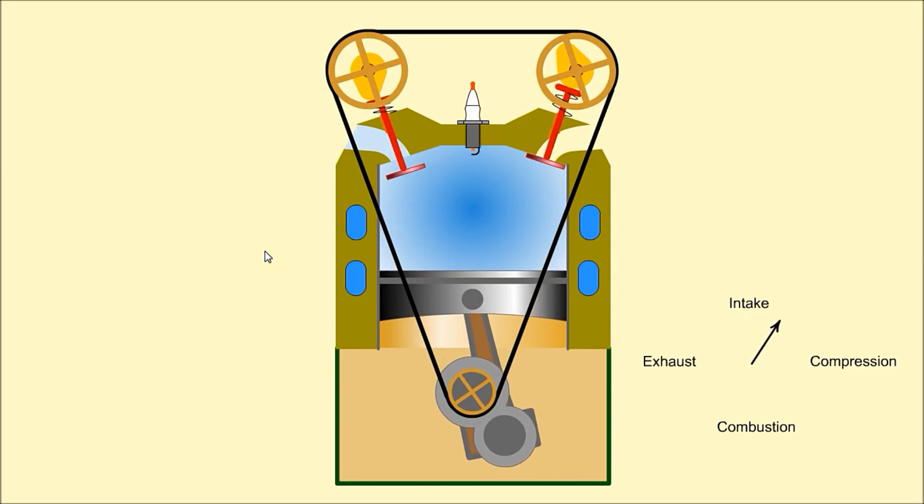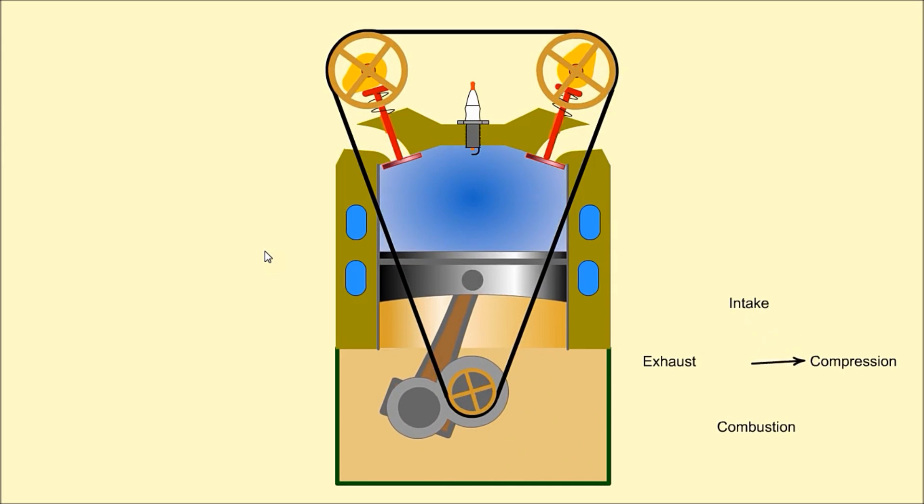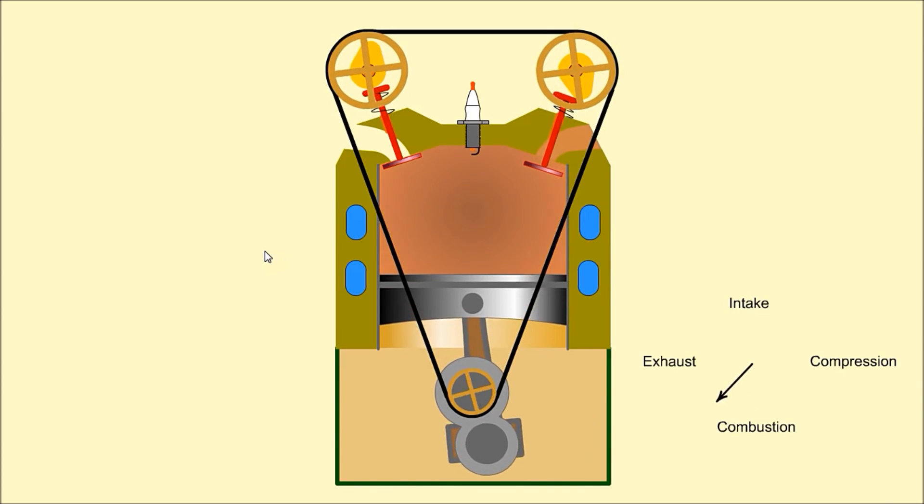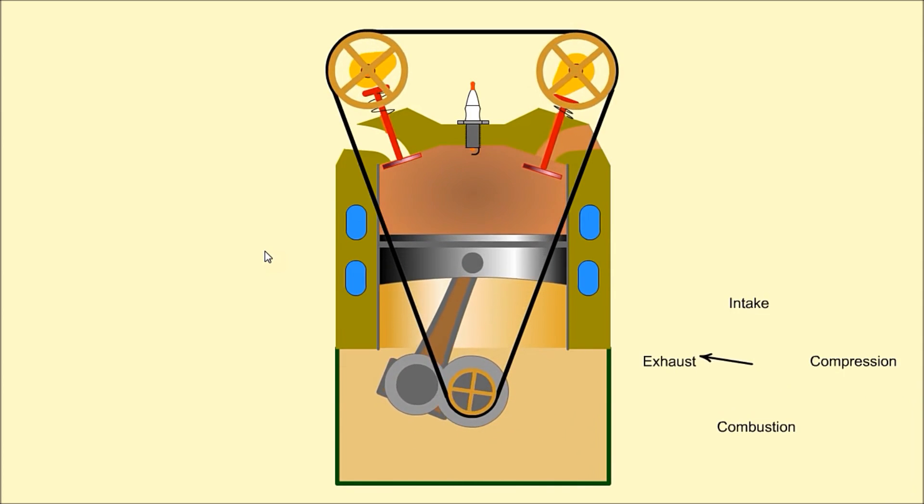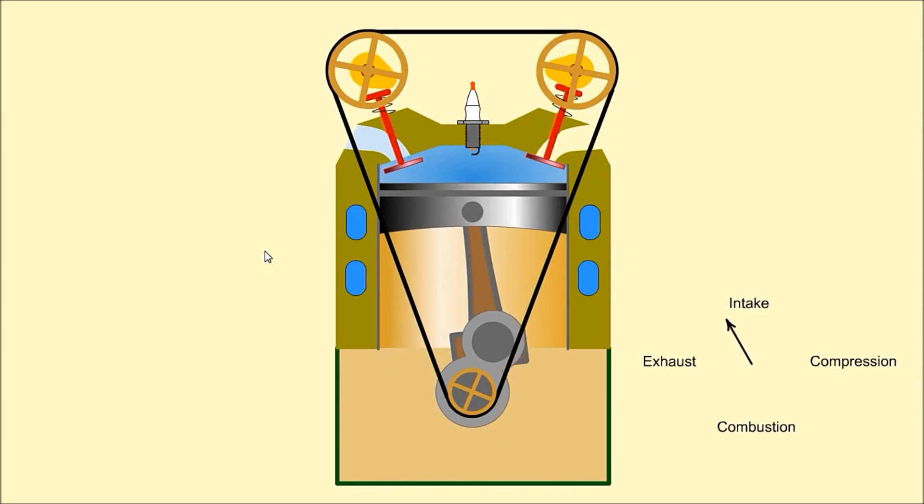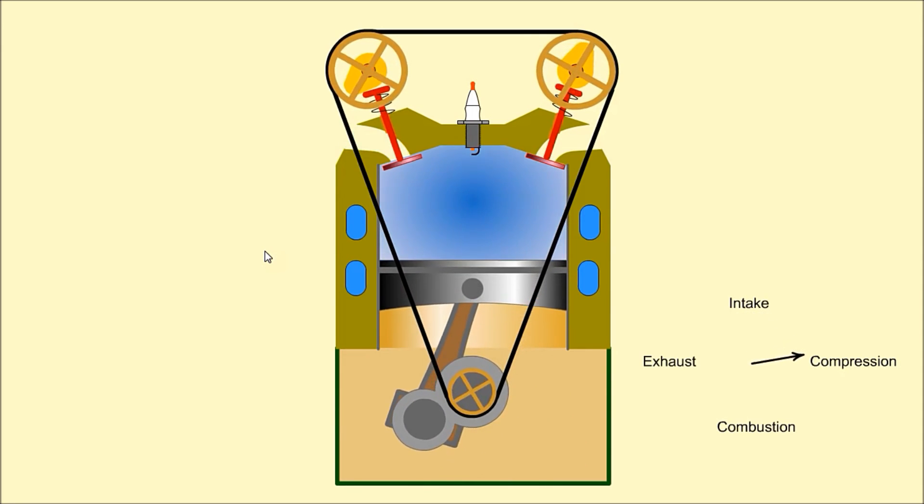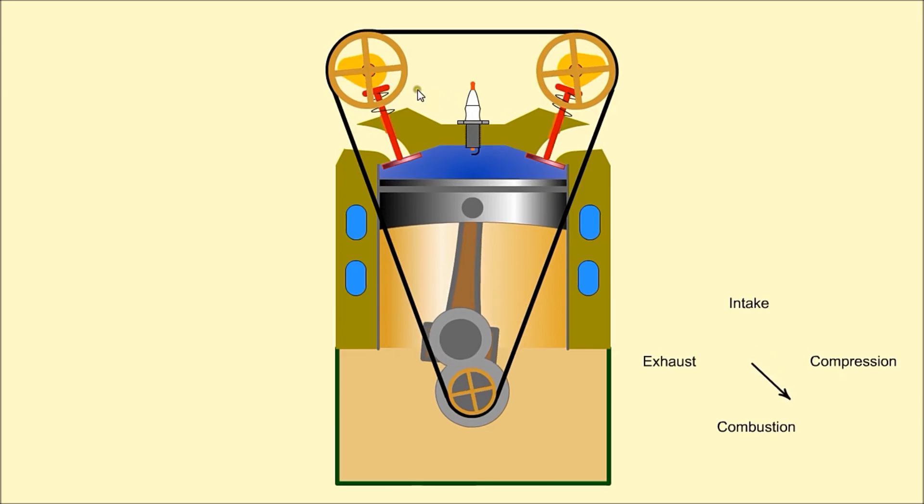Compression: the piston compresses the mixture. Combustion: compressed gas is ignited by a spark plug. Exhaust: burnt gases are expelled from the cylinder. Note the camshafts which operate the valves only rotate at half the speed of the crankshaft.